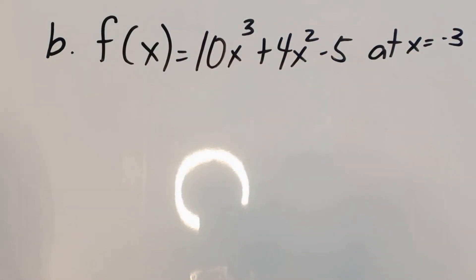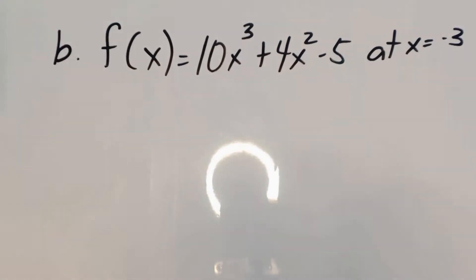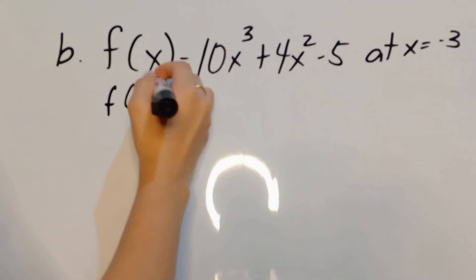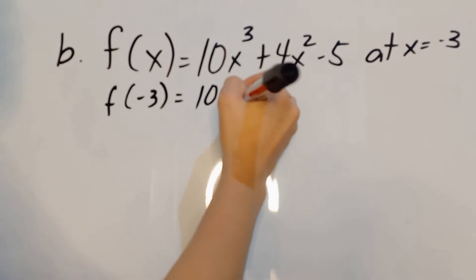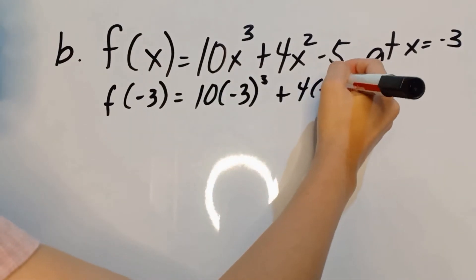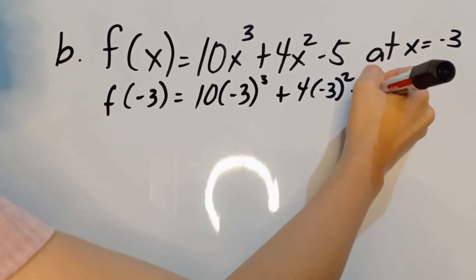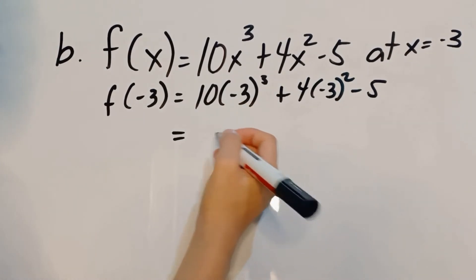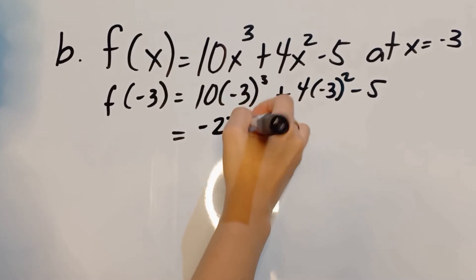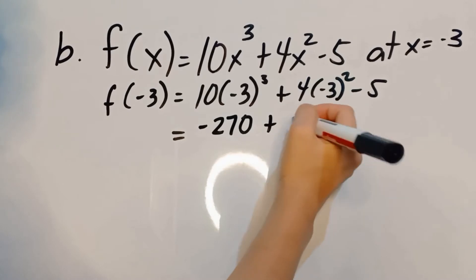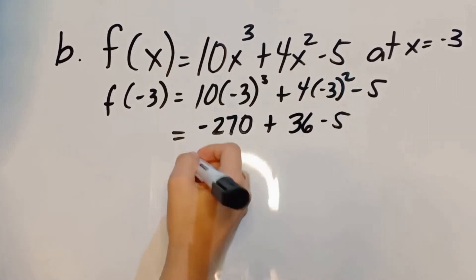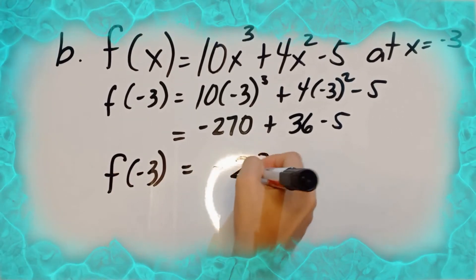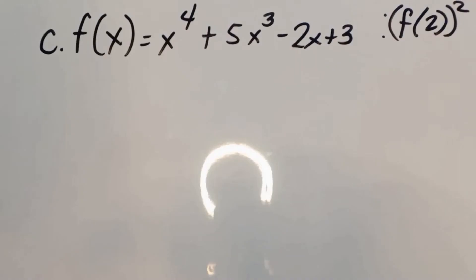Let us evaluate f(x) equals 10x cubed plus 4x squared minus 5 at x equals negative 3. All values of x equal negative 3. So we have 10 times negative 3 cubed plus 4 times negative 3 squared minus 5. Negative 3 cubed is negative 27, times 10 is negative 270. Negative 3 squared is 9, times 4 is 36. So f(negative 3) is equivalent to negative 239.